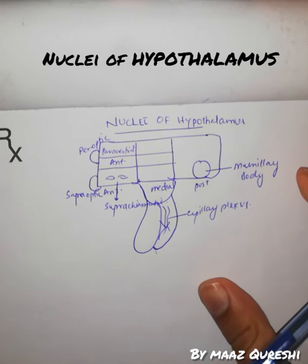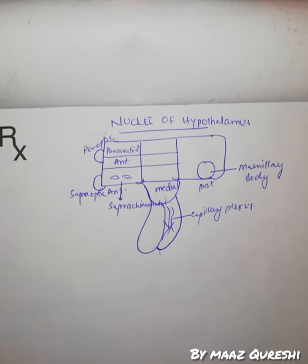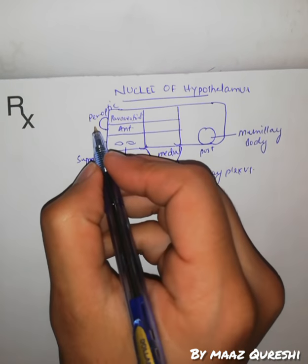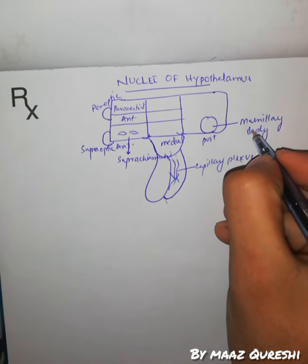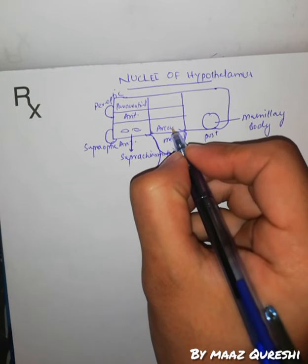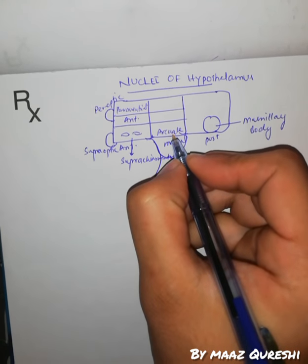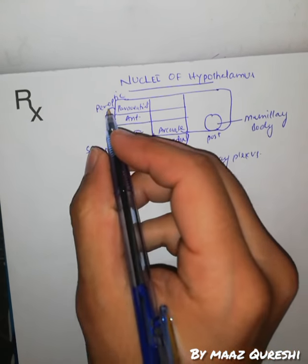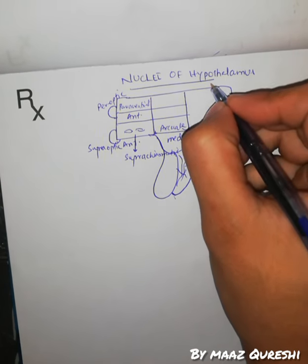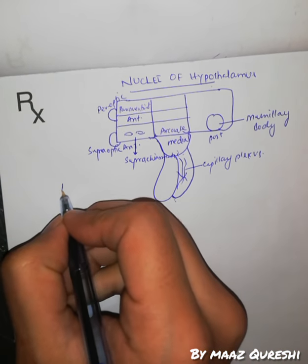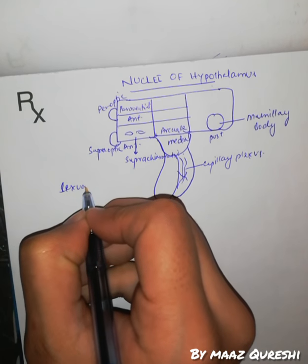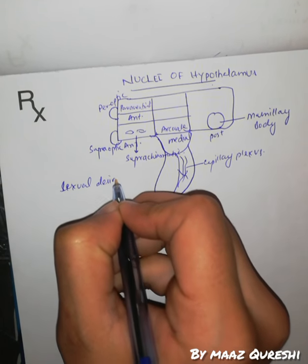Let's make it short and precise. The pre-optic nucleus, supra-optic nucleus, mammillary body, and arcuate nuclei — the pre-optic nucleus and the mammillary body, which is in the posterior, both control sexual desires.